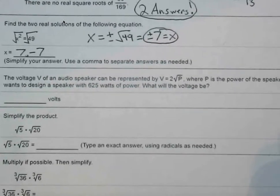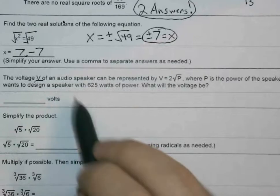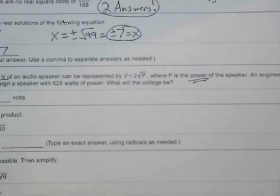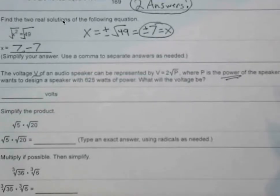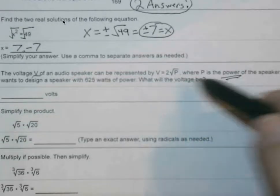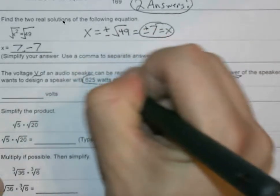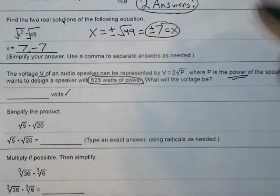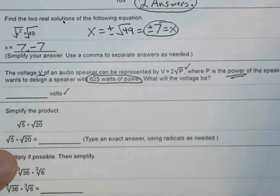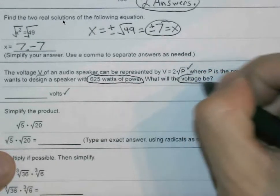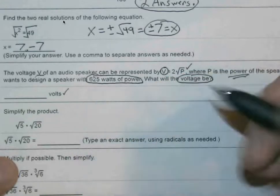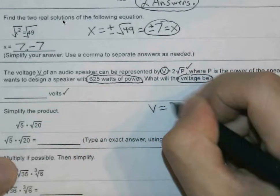Let's read this wordy problem out. We see that the voltage V of an audio speaker can be represented by V equals 2 times the square root of P, where P is the power of the speaker. An engineer wants to design a speaker with 625 watts of power. What will the voltage be? So they're giving us a form of power, and we're trying to solve for volts. If you're taking physics, you'll eventually see that you focus more on the formula and not just the numbers. So what do we have here? We know that we have P, 2 is a constant, but notice that we're trying to solve for the voltage.